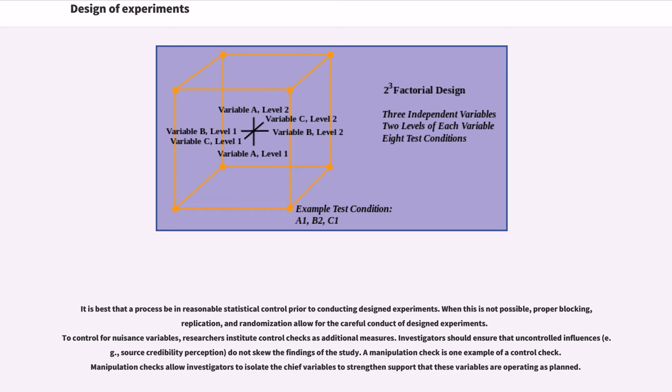When this is not possible, proper blocking, replication, and randomization allow for the careful conduct of designed experiments. To control for nuisance variables, researchers institute control checks as additional measures. Investigators should ensure that uncontrolled influences, for example, source credibility perception, do not skew the findings of the study. A manipulation check is one example of a control check. Manipulation checks allow investigators to isolate the chief variables to strengthen support that these variables are operating as planned.